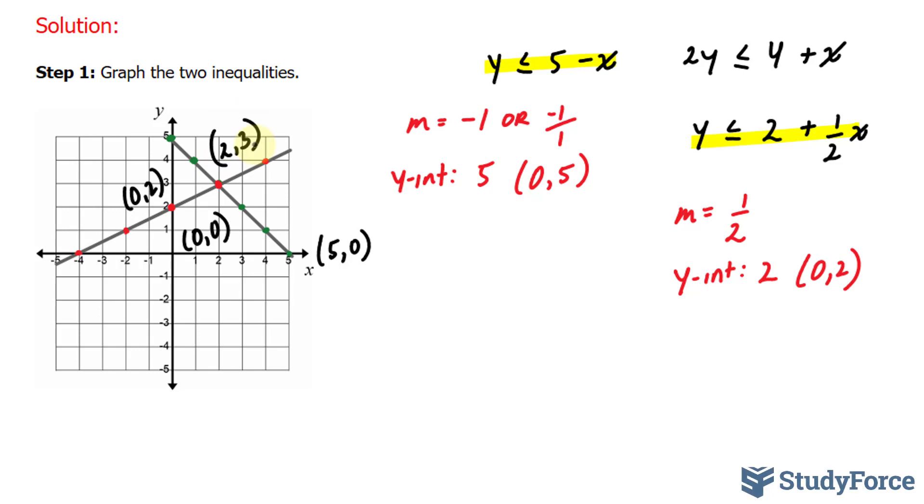We will evaluate the function z at all four of these points. Remember our function was z equals 5x plus 10y. Our first point is 0 and 0. 5 times 0 plus 10 times 0 gives us 0.